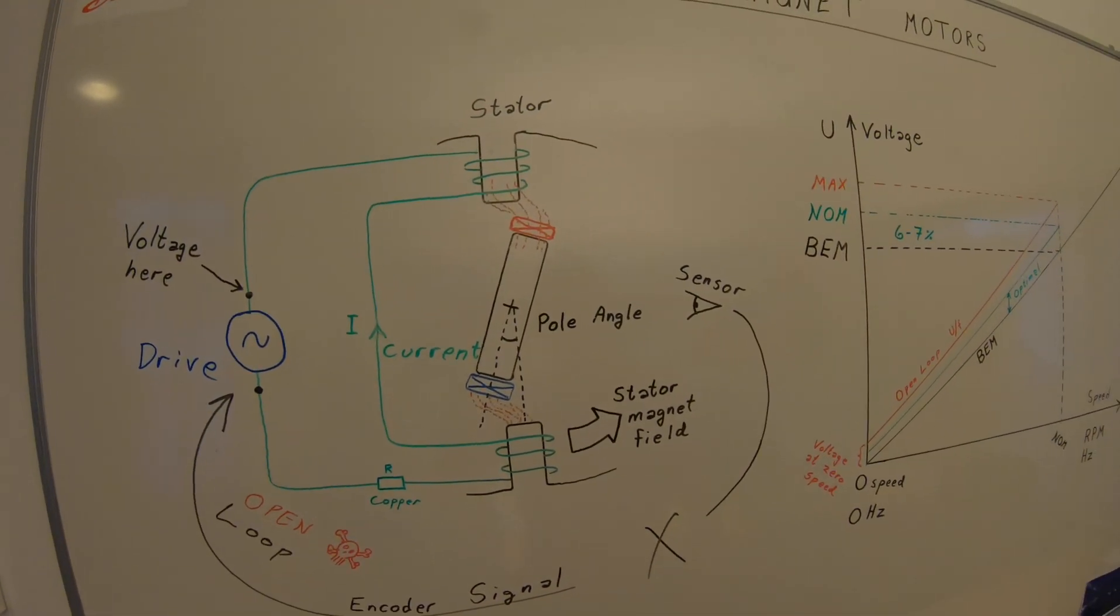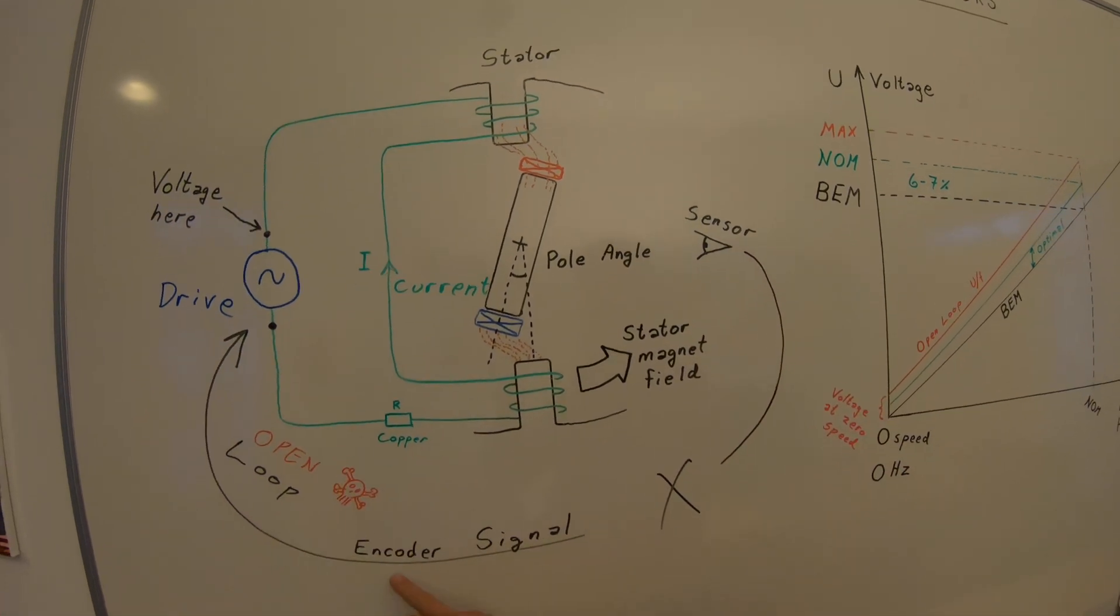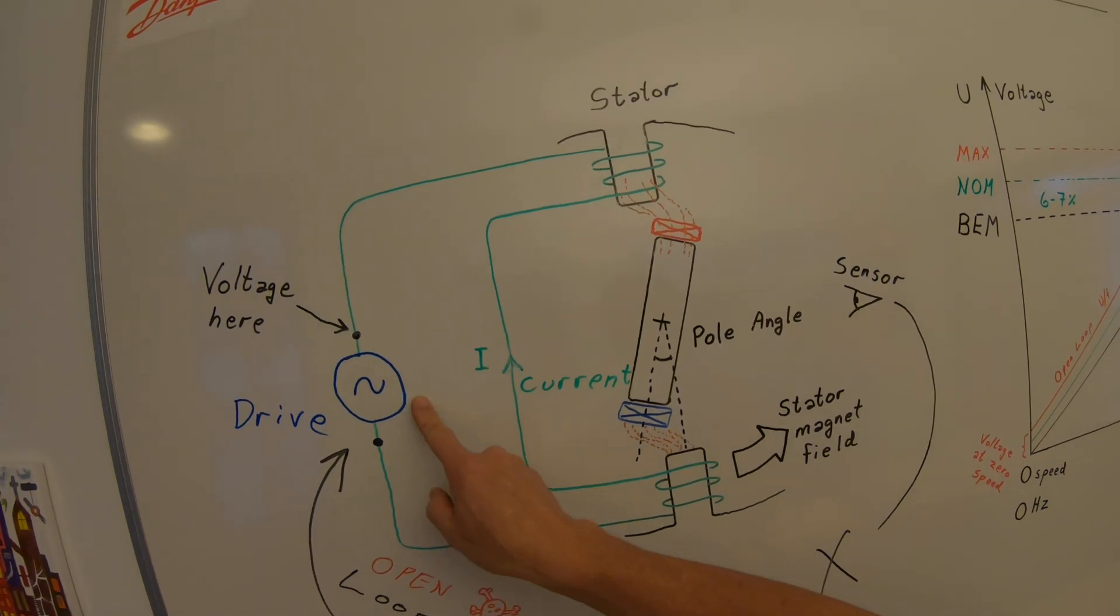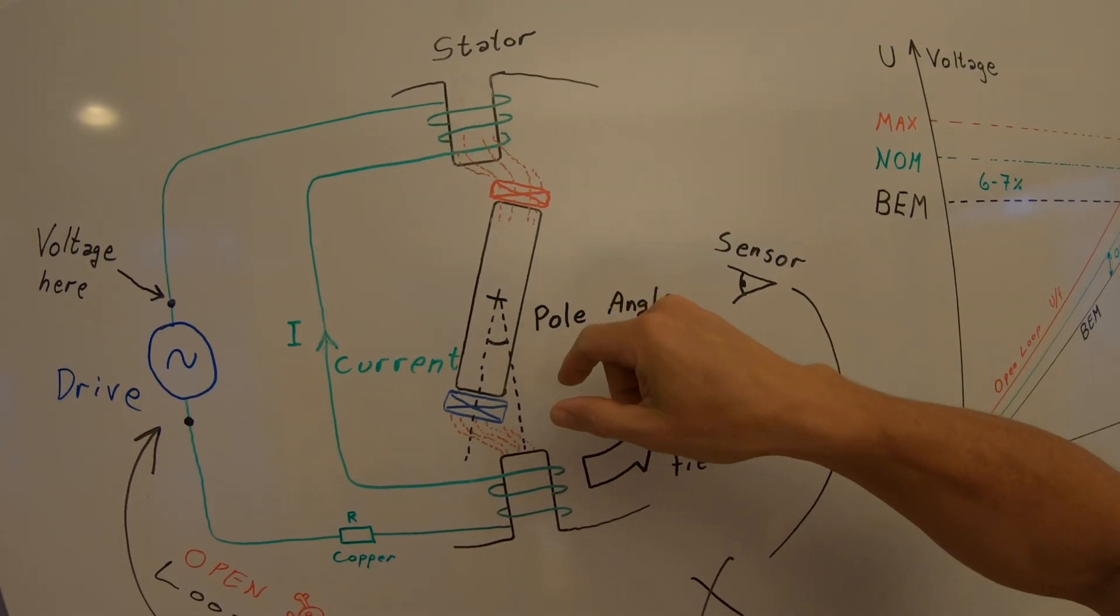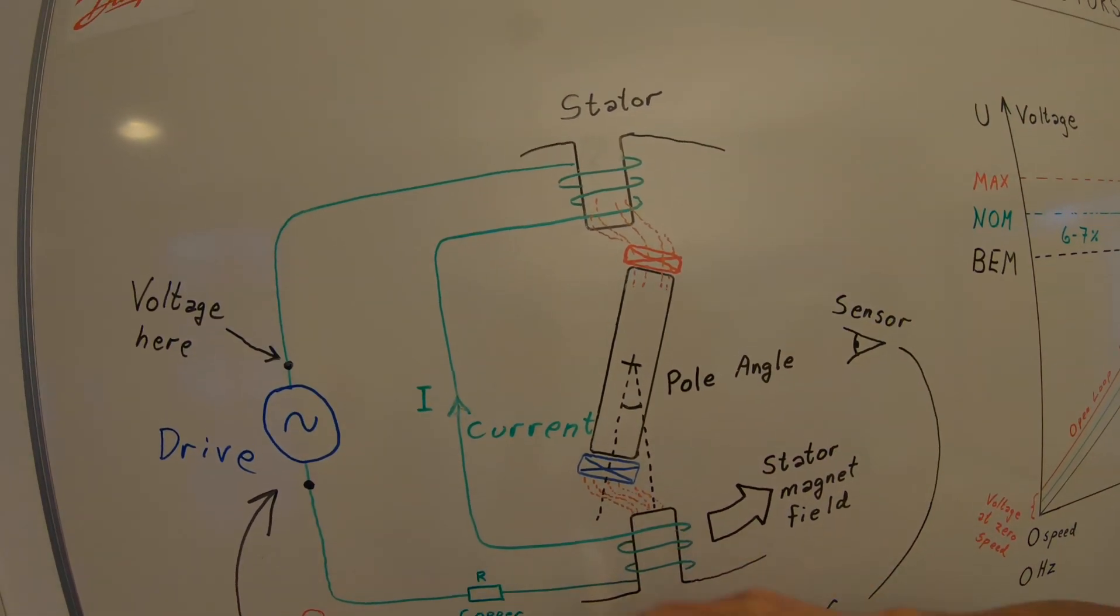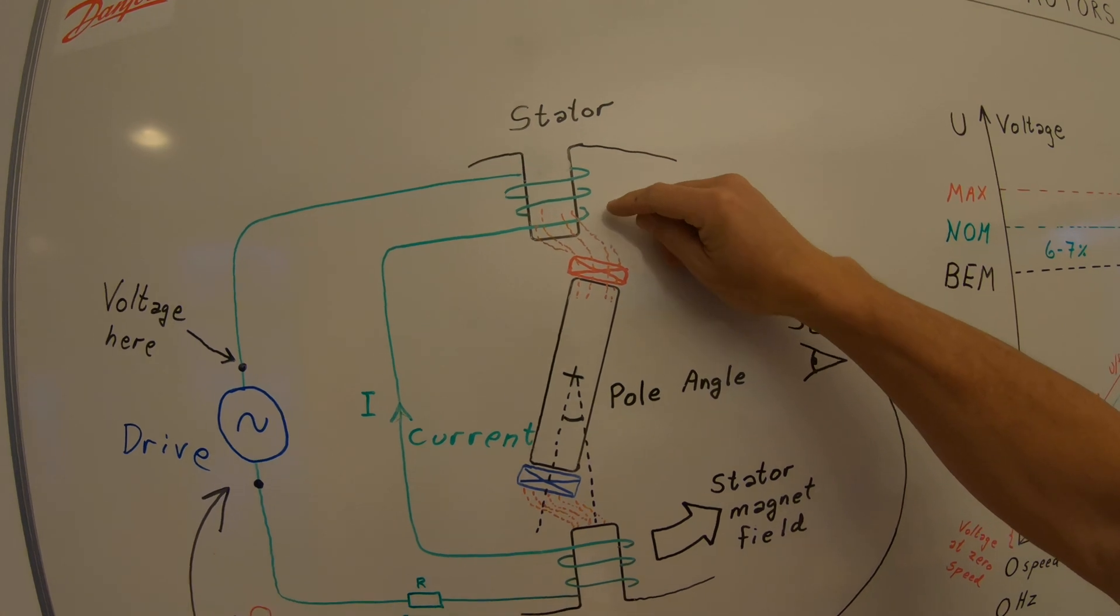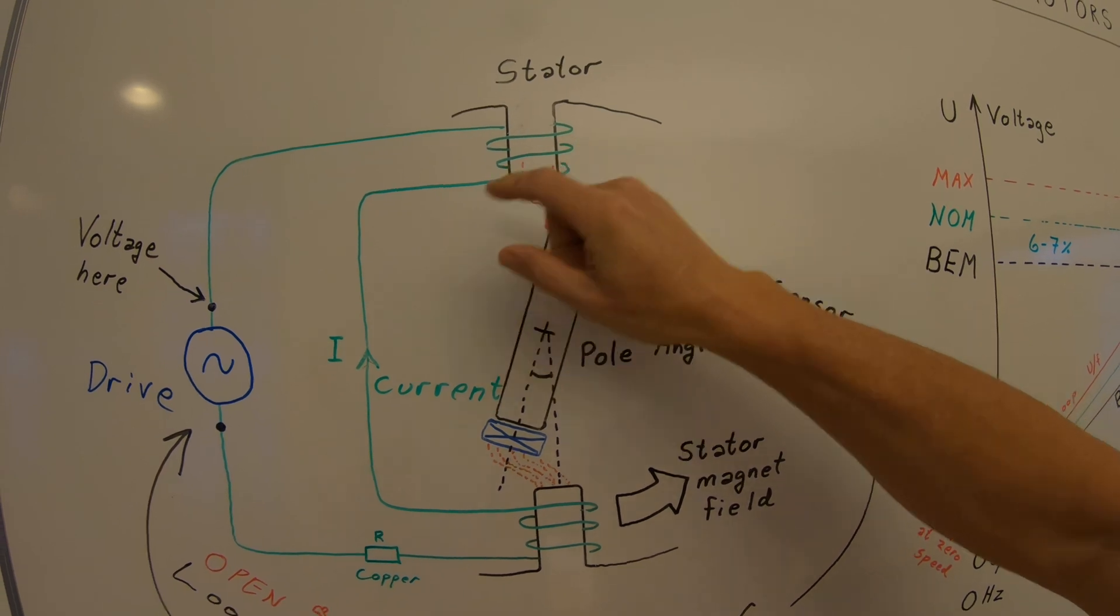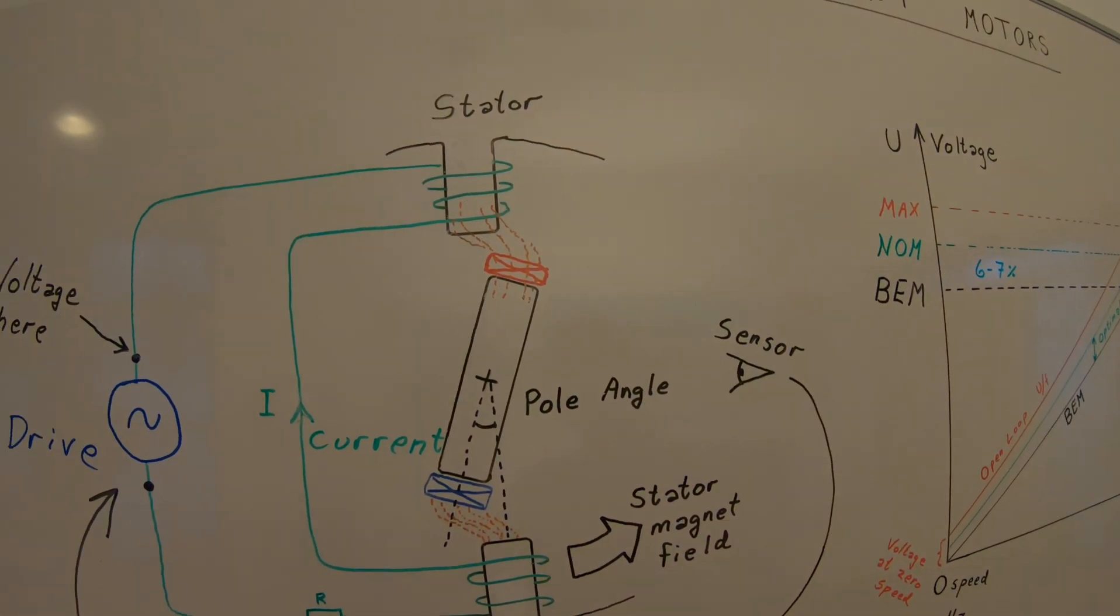What about running the permanent magnet motor in open loop? We are running then without the sensor, without the encoder and resolver signal. Then the drive does not know for sure what the pole angle is. So the way to do it in open loop is that we create an excessive reactive current. So the force between the stator field and the magnet is quite high. The reactive current can then be all the way up to its maximum torque.